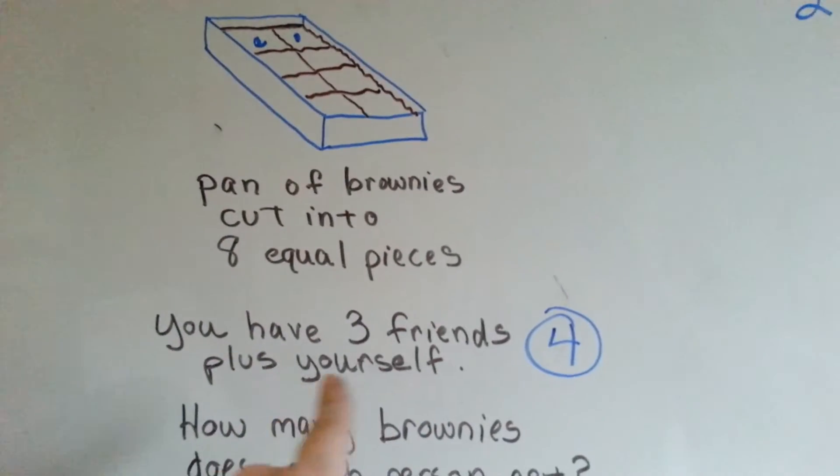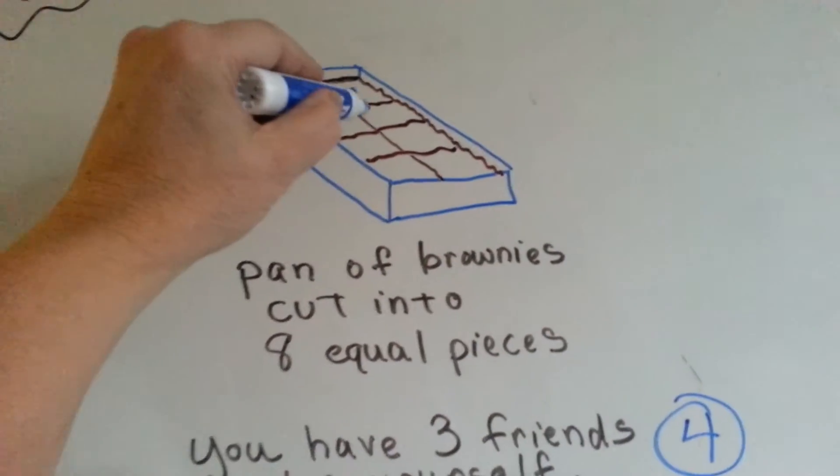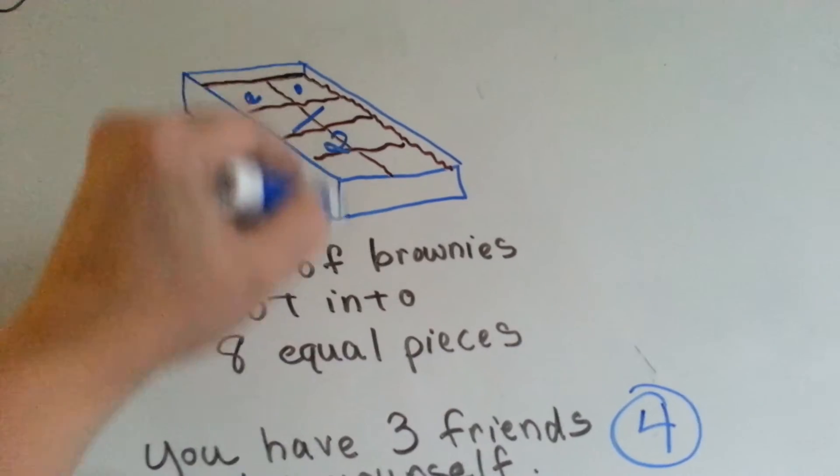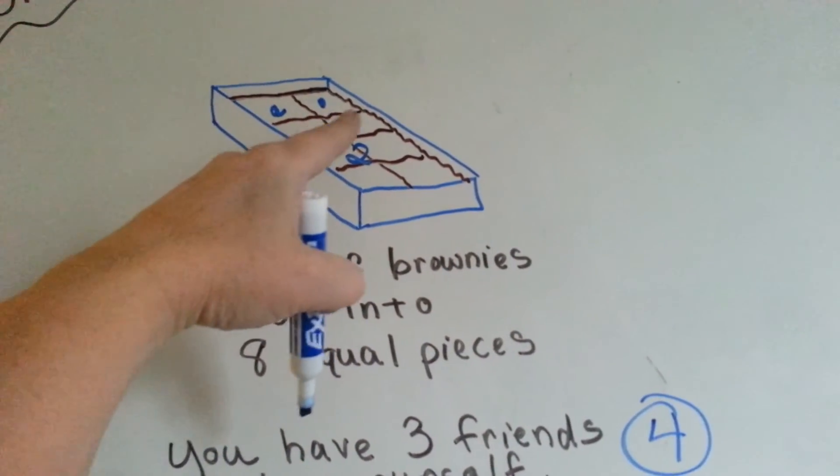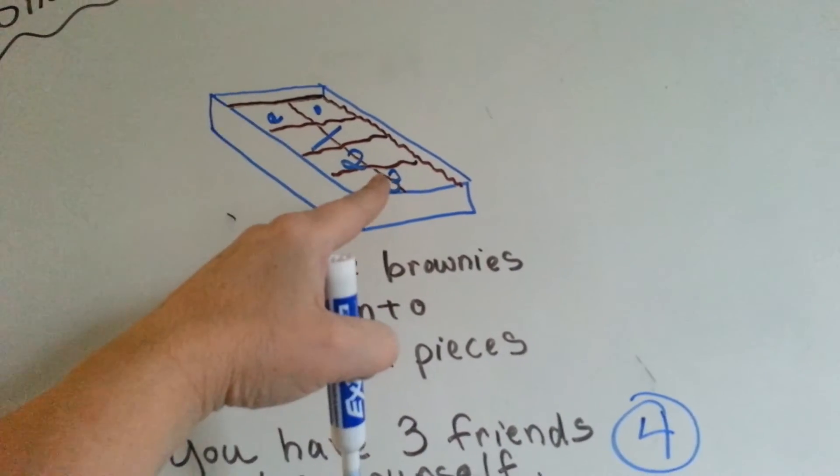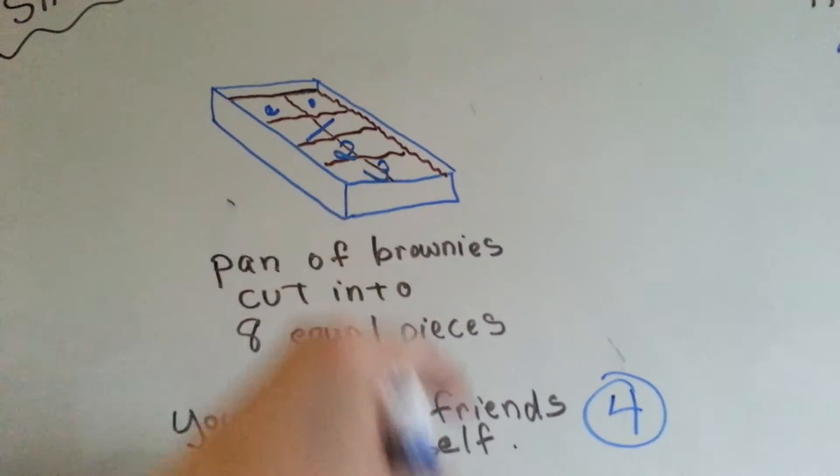And now you still have three friends. This one can go to friend one. This two can go to friend two. Those two go to friend one, these two go to friend two, and these two go to friend three. And everybody gets two brownies.